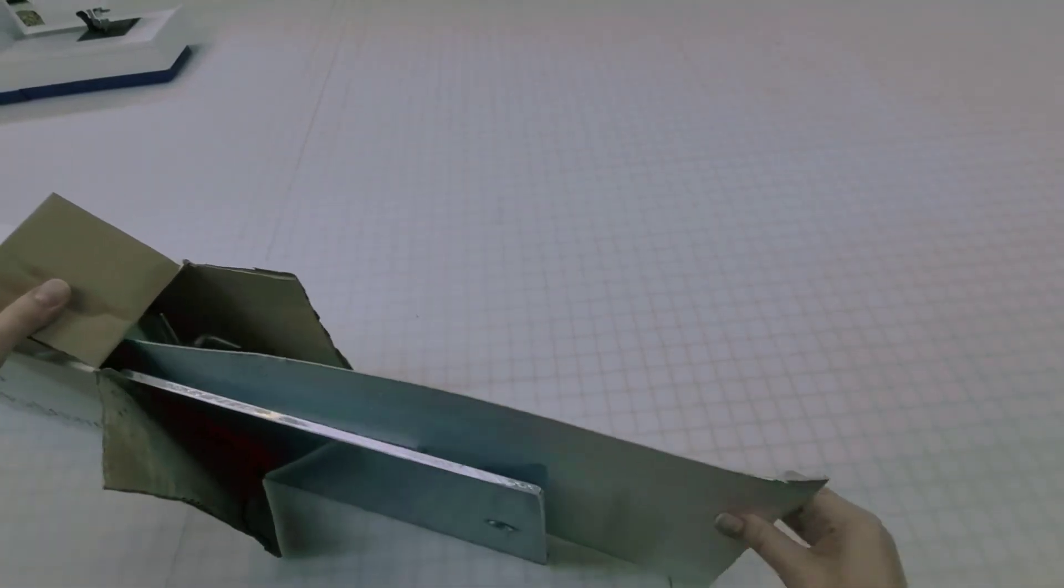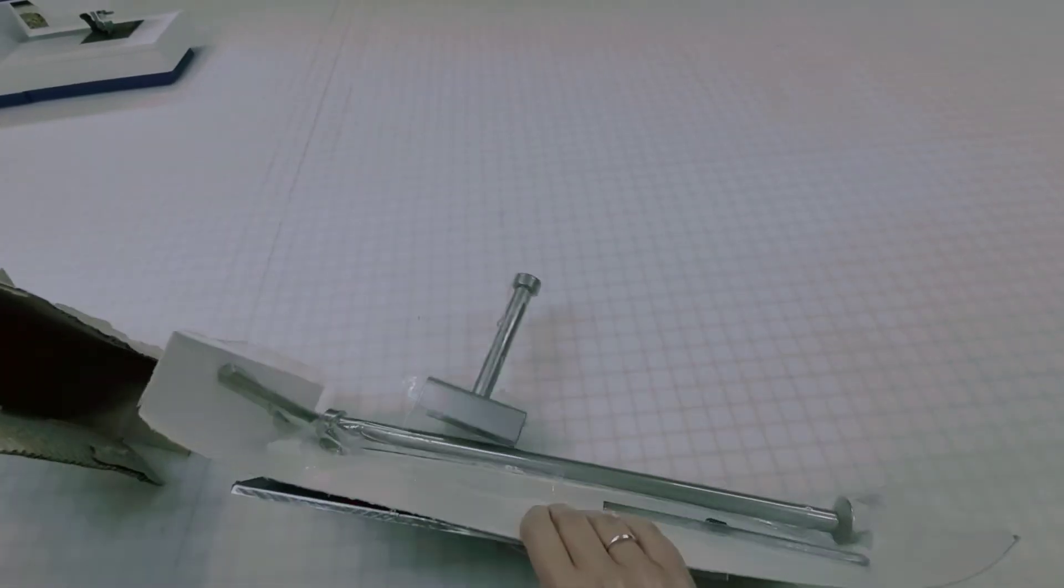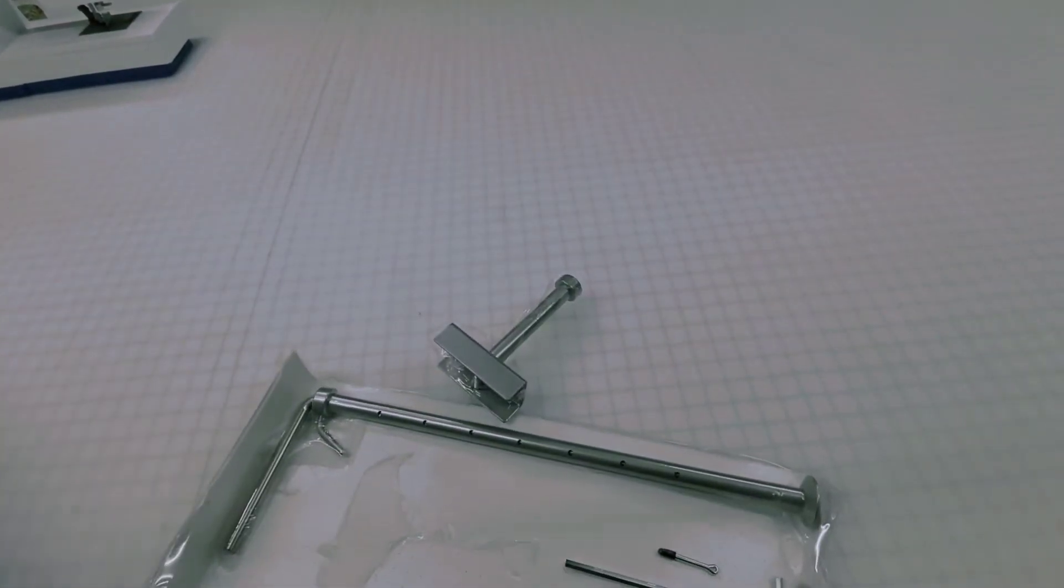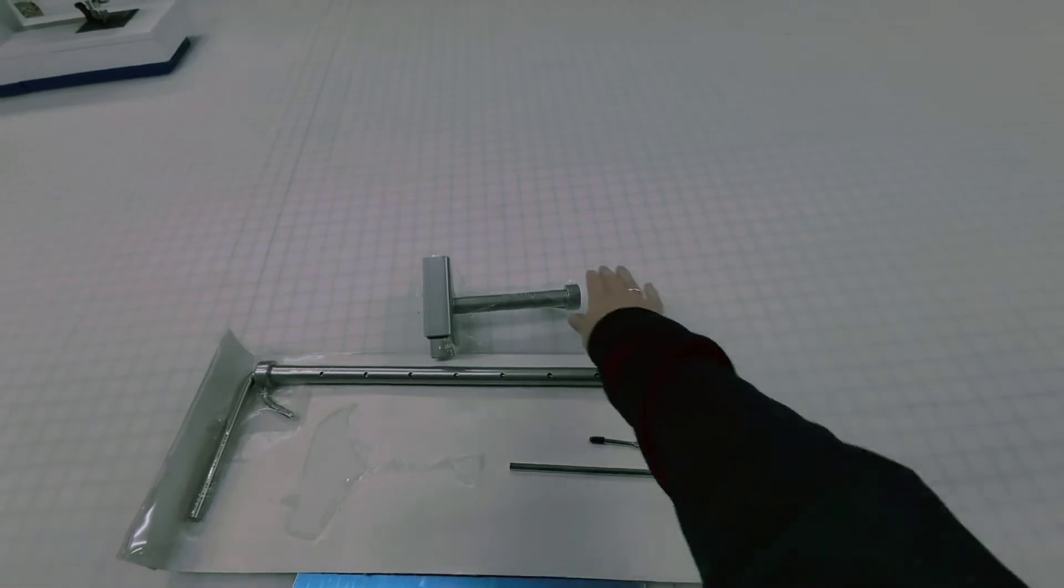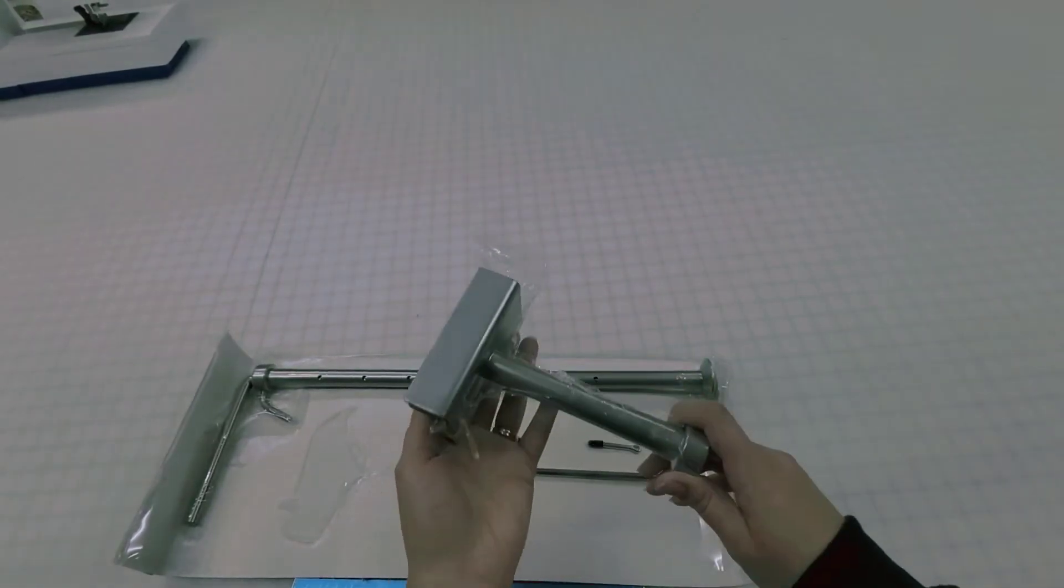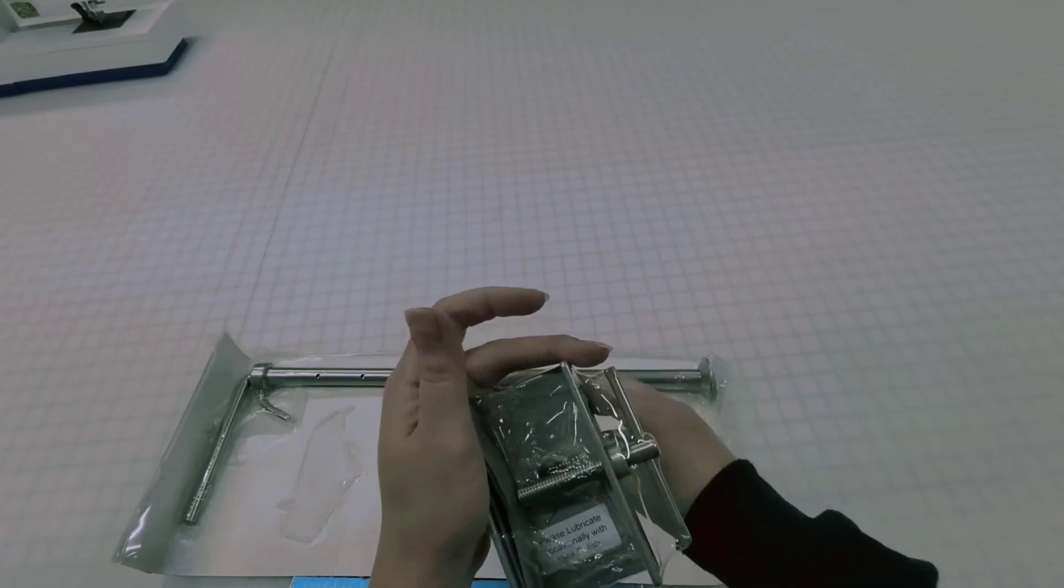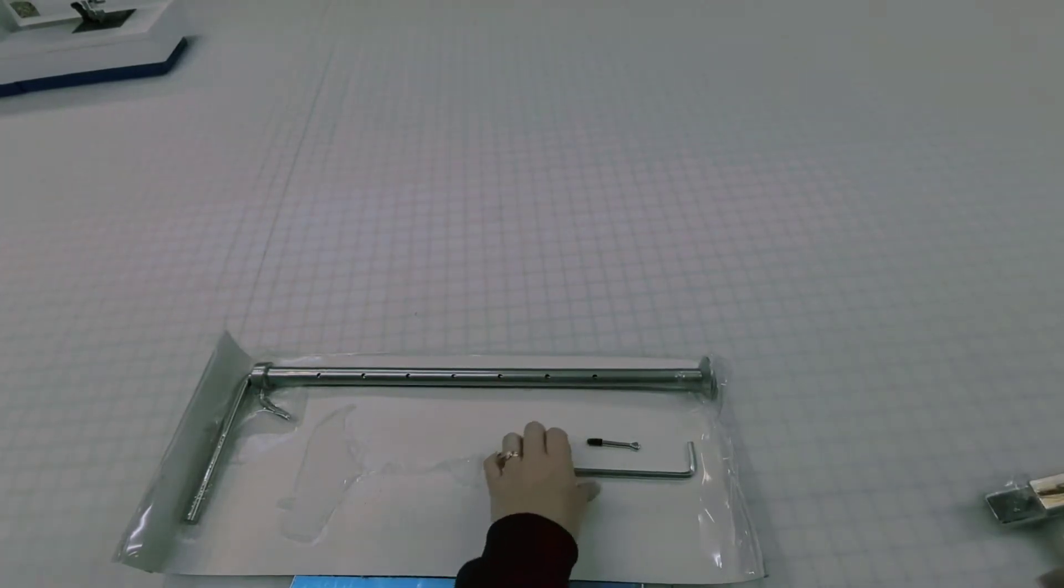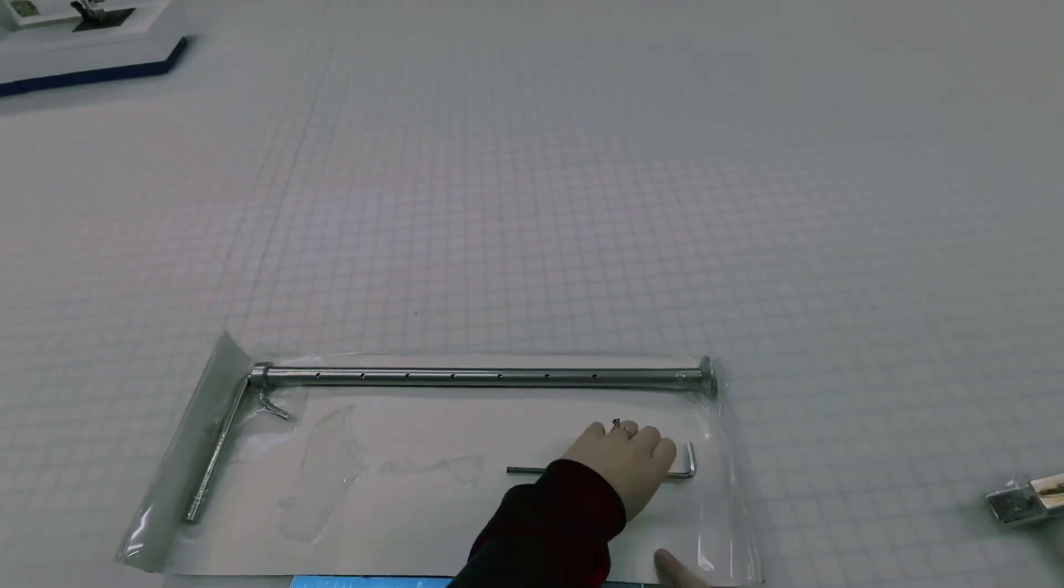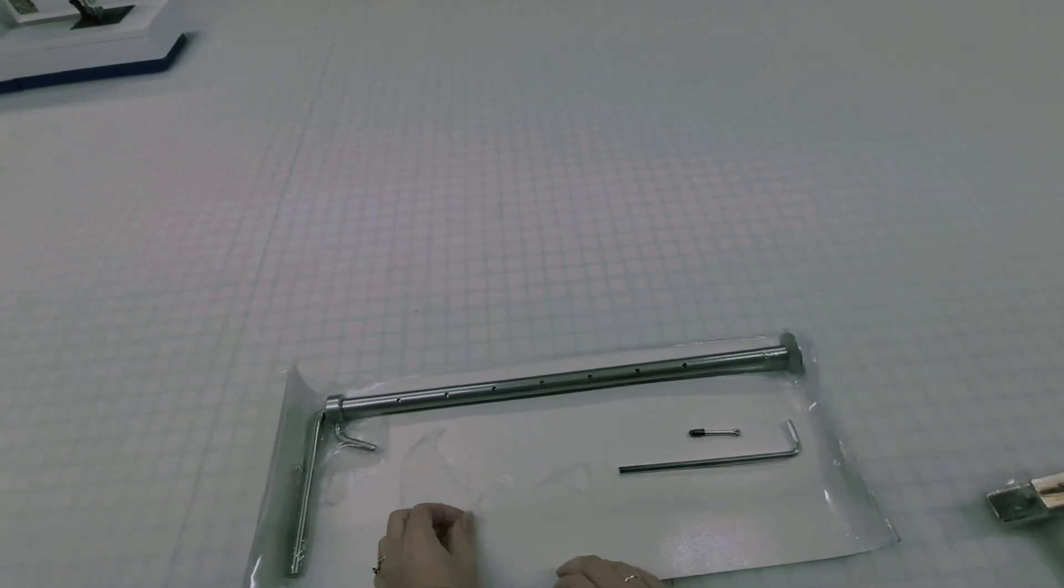Okay, so I got the end of it open. All right, so that's what comes in the box. I guess this is the, yep, that's the clamp. And I guess there's some wax that you're supposed to use to care for it.